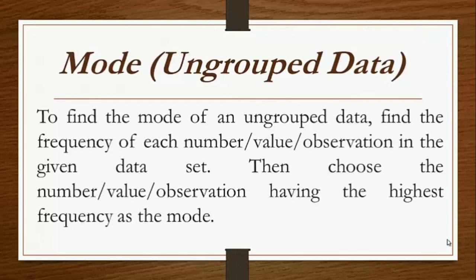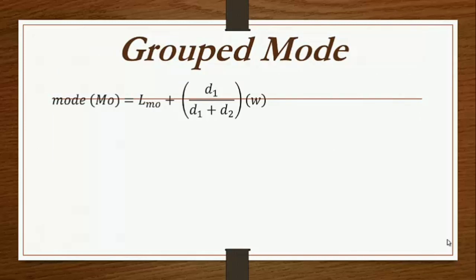To find the mode of ungrouped data, find the frequency of each value or observation in the data set, then choose the value with the highest frequency as the mode. To solve for the mode of grouped data, substitute in the given formula.